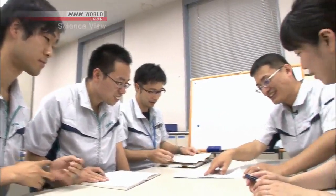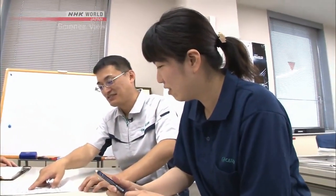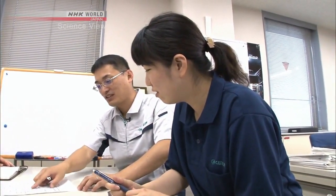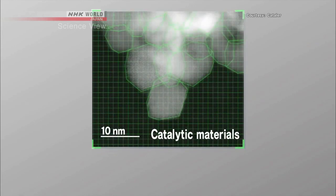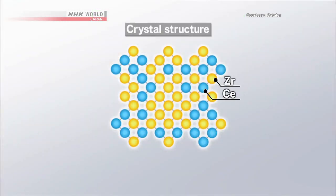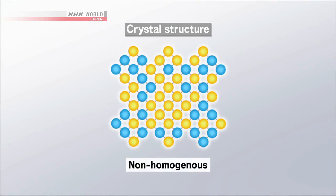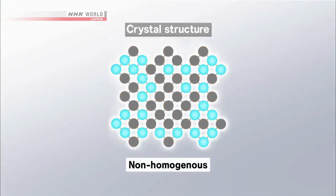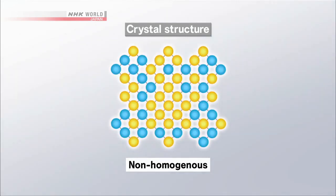This is the strategy that Ori and his team took. The oxygen-absorbing and releasing material is made from two types of elements, called cerium and zirconia. Conventionally, these two types of elements were not distributed uniformly, so the reactions were irregular, and the treatment of the nitrogen oxide could not be performed efficiently.